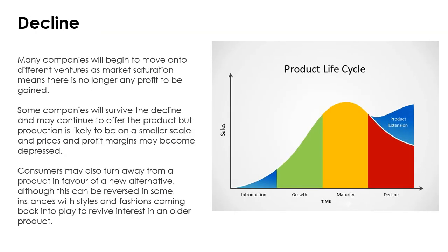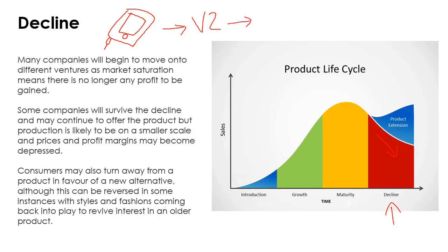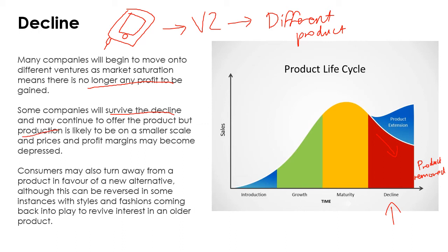Then we get to the inevitable decline of the product. For example, with my beautiful smartphone designed at the beginning with a headphone jack, this is where I might start moving on to version two or a completely different product. There might not be any profit left to be gained at this stage; the product may be removed from the market completely. Some companies will survive the decline and continue to offer the product, but production is likely to be much smaller.